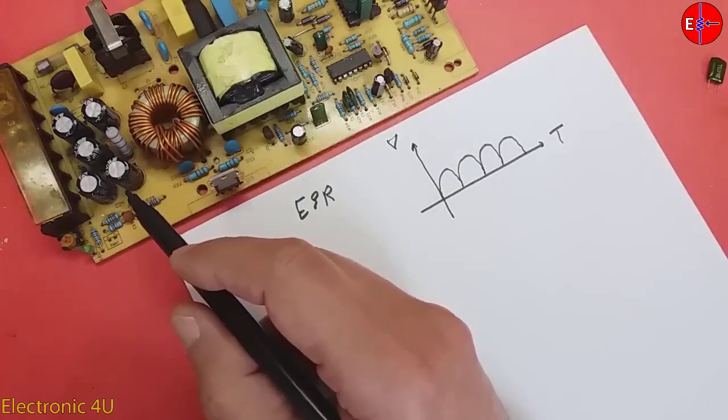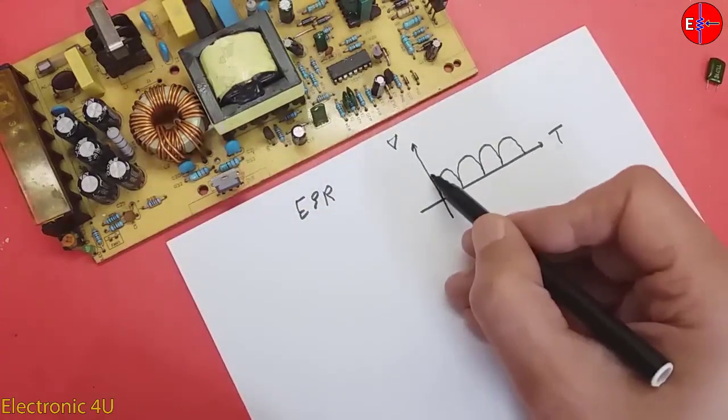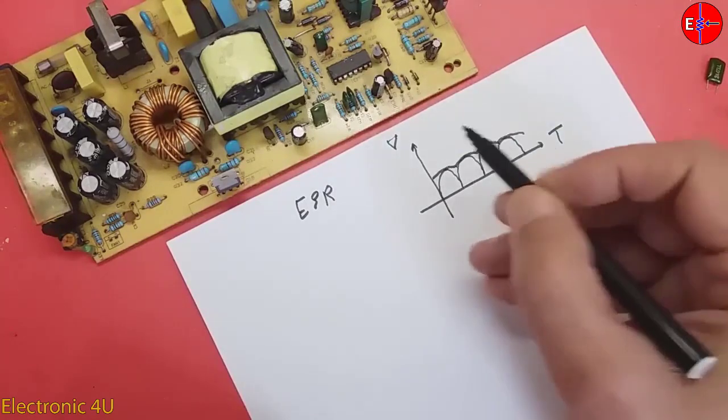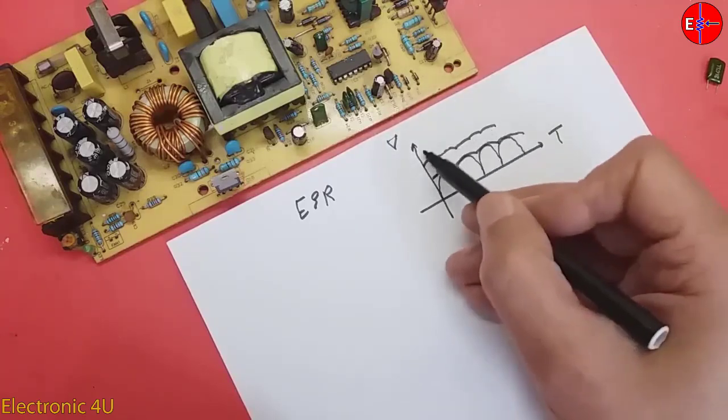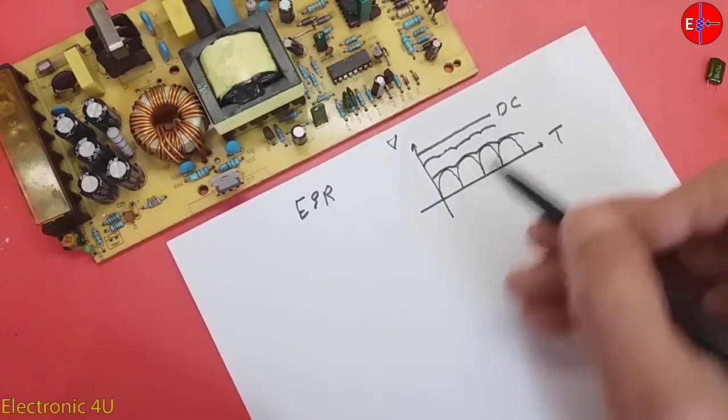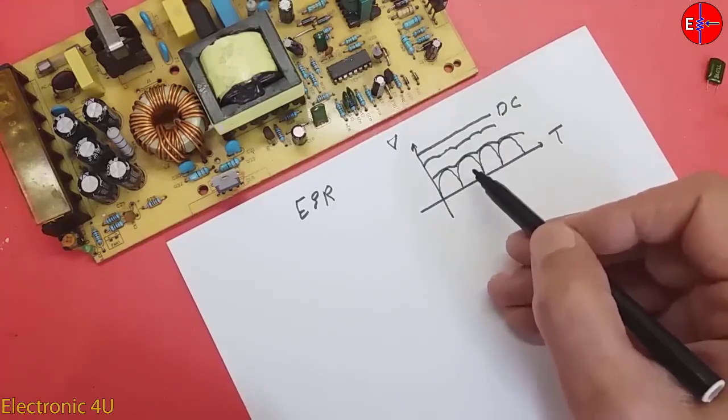When the voltage enters the capacitor, these ripples are eliminated. In this way, the capacitor will be charged and discharged. Which we consider as DC voltage and in the form of a straight line. The higher the capacity of the capacitors, the better they eliminate the ripple.